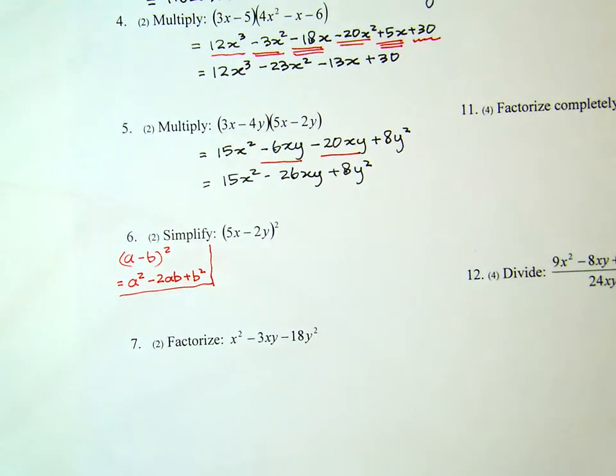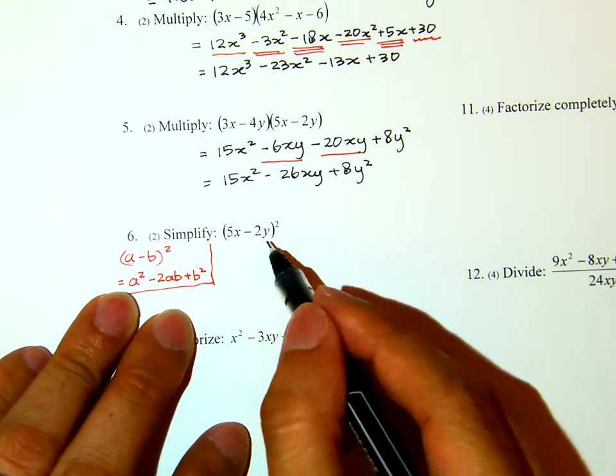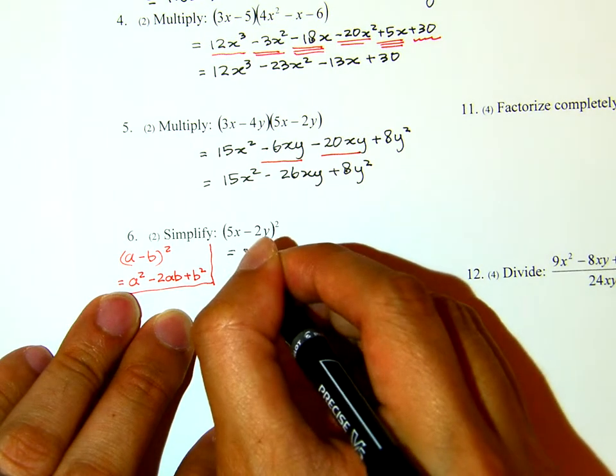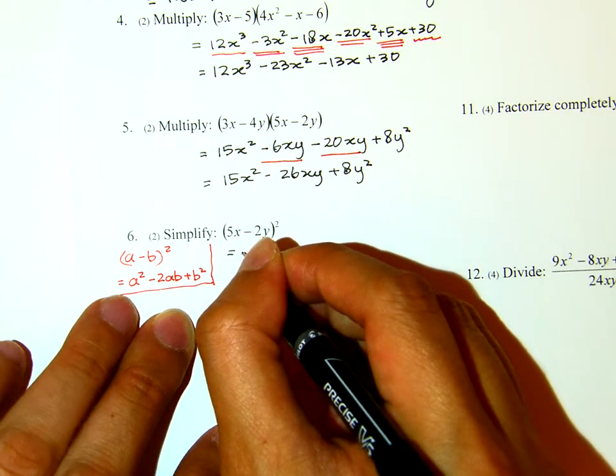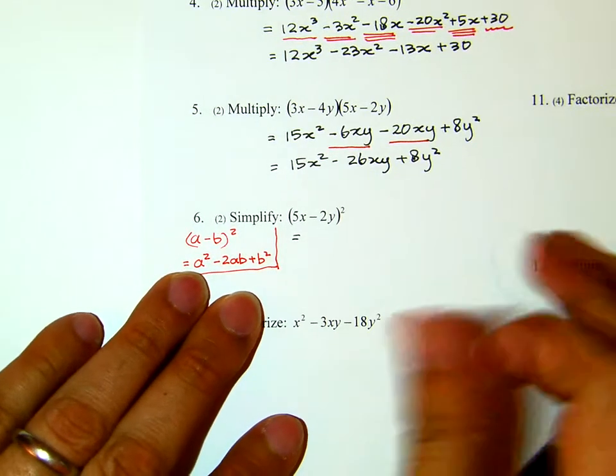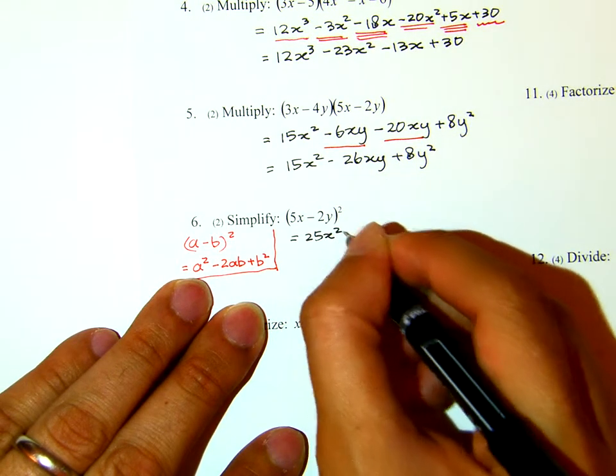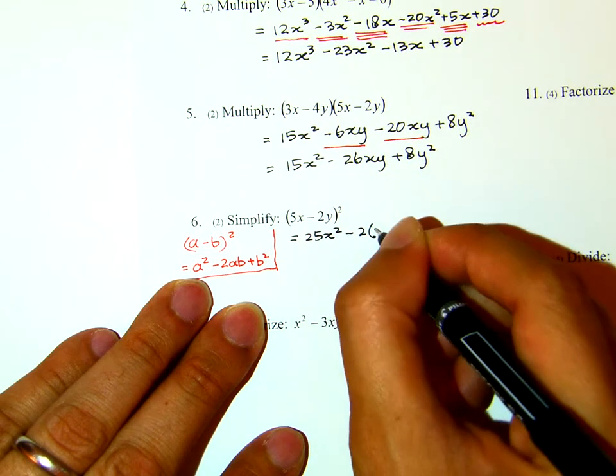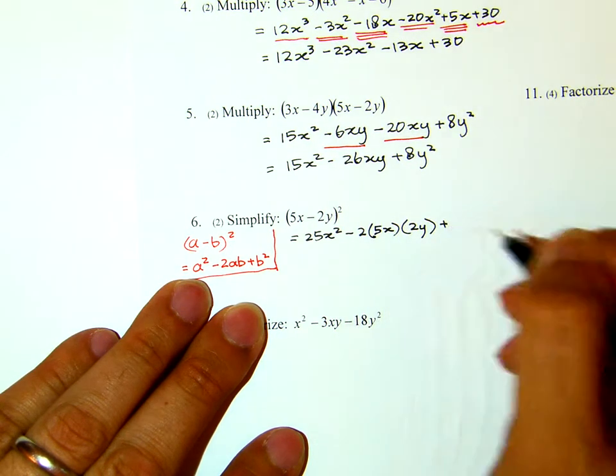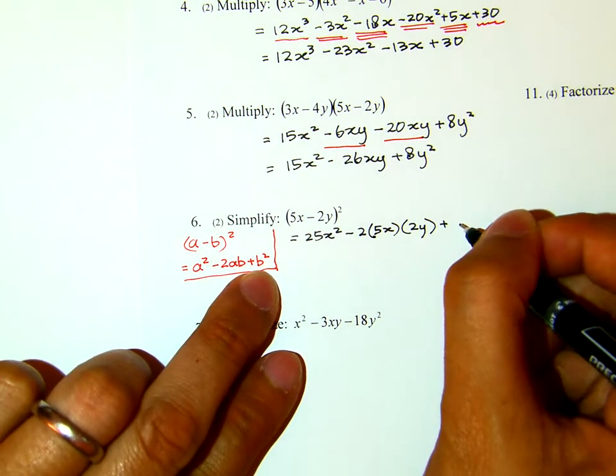If we use that, then you see that in this case, our A is actually 5x, and our B is 2y. This will then equal the square of 5x. The square of 5x is 25x squared minus 2 times 5x times 2y plus the square of 2y. The square of B, the square of 2y here, that will be 4y squared.